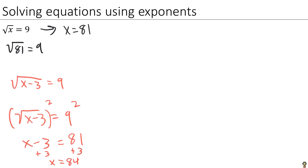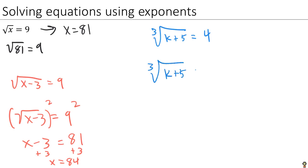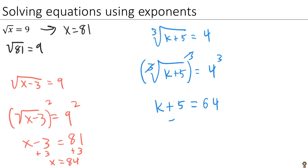Let's look at another example with a different power. Say we have the third root of k plus 5 equals 4, and we want to find k. The index of the radical is 3, so we raise both sides to the third power, which cancels the radical off. On the left we get k plus 5, and on the right 4 cubed is 64. Subtracting 5 from both sides gives k equals 59.